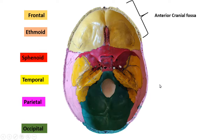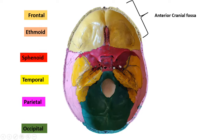Now we will discuss the cranial fossae. First we have the anterior cranial fossa. Anteriorly it is bounded by the frontal bone, posteriorly we have the lesser wing of the sphenoid bone, and in the center you will see the ethmoid bone — specifically the cribriform plate of the ethmoid bone. So these are the boundaries.